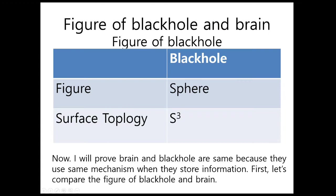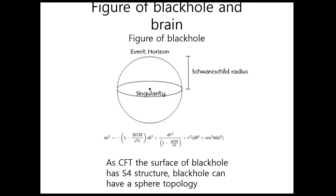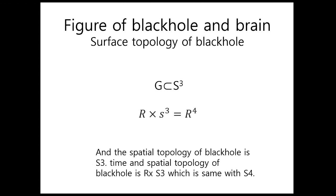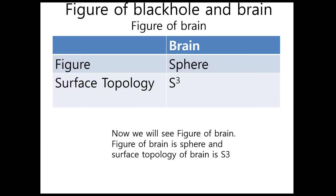Now I will prove that brain and black hole are the same because they use the same mechanism when they store information. First, let's compare the figures. The figure of the brain and black hole is a sphere. The surface topology of a black hole is S3. At CFT, the surface of the black hole has an S4 structure. The black hole can have a sphere topology, and the spatial topology of a black hole is S3. The time and spatial topology of a black hole is R multiplied by S3, which is the same as S4.